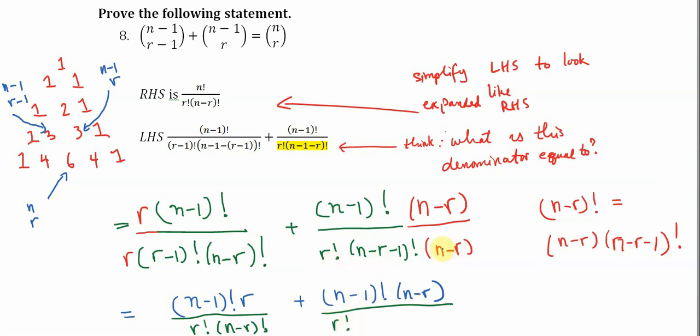Now again, n minus r times n minus r minus one factorial is the same thing as n minus r factorial. So you see that the denominators here are identical.